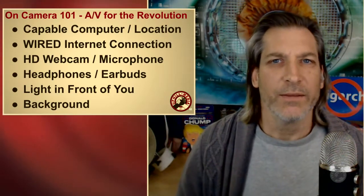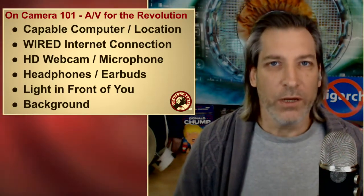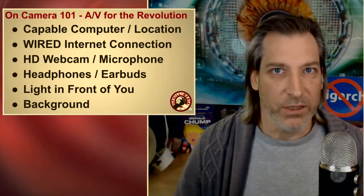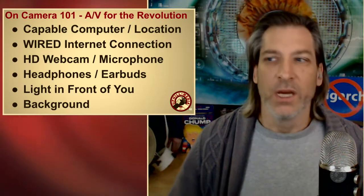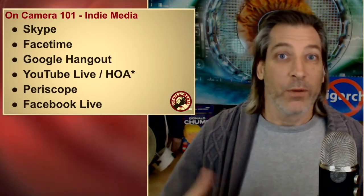Hey everybody, John Ellis with Uphill Media. This is a quick video on what you need to do if you're anybody involved in the progressive movement that's going to be on camera. If you're going to be interviewed for any reason, you're more than likely going to be using systems like Skype, FaceTime, Google Hangout, YouTube Live, Periscope, or Facebook. Independent media uses these systems. You need to be ready — especially if you're a candidate running against somebody with access to mainstream media tools who has people making them look like a million bucks.